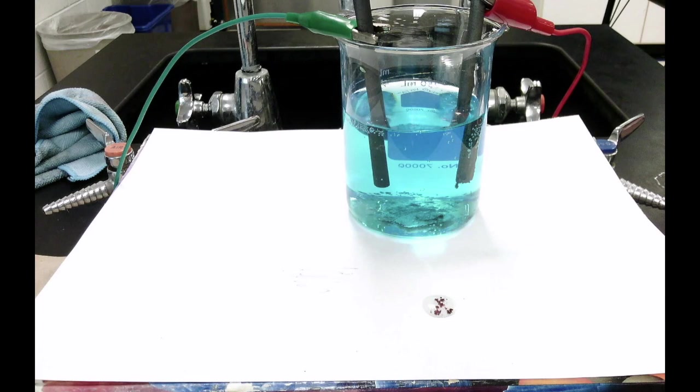The last thing that you're going to want to think about with regards to this lab is you're going to want to think about how the electrons are moving when each substance goes from being an ion to a neutral element. So what's happening to the electrons when the copper ion goes from being a dissolved copper ion to solid neutral copper metal? Likewise, what's happening with the electrons when the chloride ion goes from being a dissolved chloride ion to neutral chlorine gas?